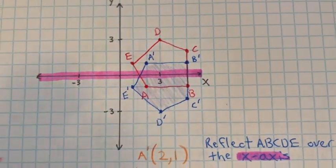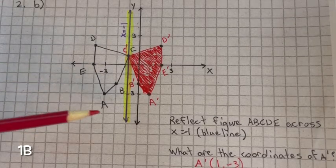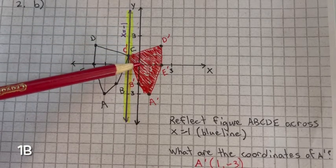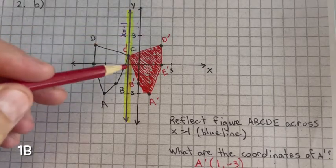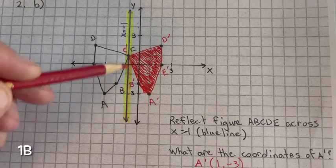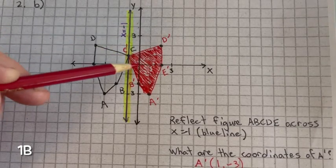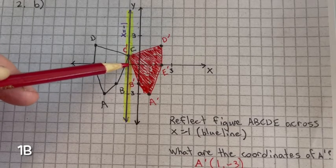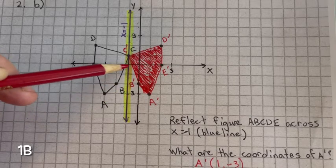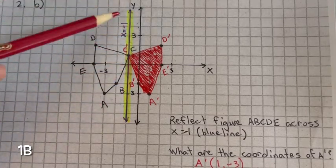We need to reflect figures a, b, c, d, e across x equals negative 1. The way to find x equals negative 1 is you start at the origin, go to negative 1 on the x-axis, put a hash mark there, and you can see that hash mark makes a vertical line — that's the line for x equals negative 1. Every x value on this line has a value of negative 1.